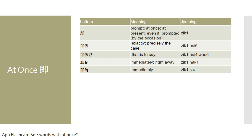The word 直 is seldom used individually, so it's usually attached to other characters to form meaningful words. For example, the first combination is 直是, meaning exactly or precisely the case. You could also append the character 話 behind 直是, in which case the meaning becomes 'that is to say,' pronounced 直是話.